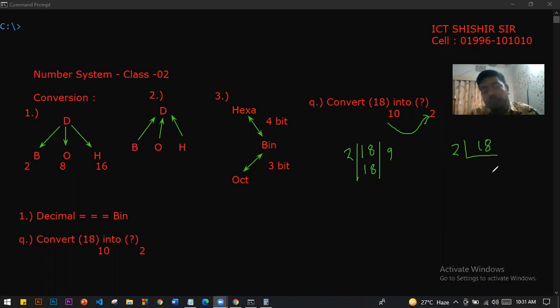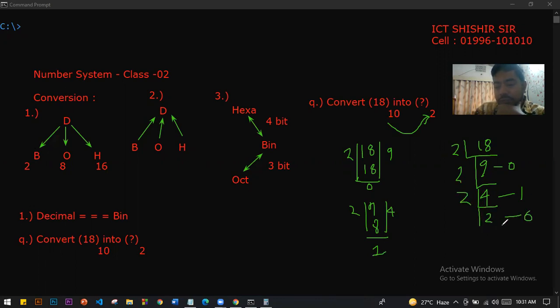18 divided by 2 gives 9 remainder 0. Then 9 divided by 2 gives 4 remainder 1. Then 4 divided by 2 gives 2 remainder 0. Then 2 divided by 2 gives 1 remainder 0. Then 1 divided by 2 gives 0 remainder 1.